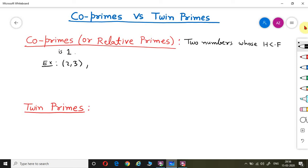Similarly, if we take an example 8, 9, between these two numbers also, only 1 is the common factor. So HCF will be 1.